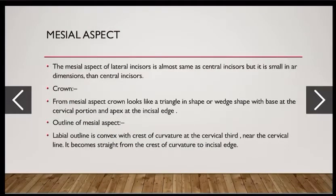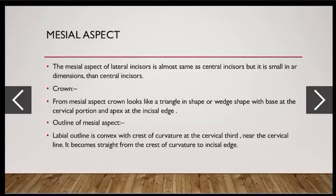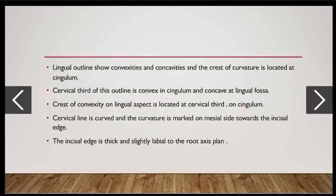Mesial aspect: the mesial aspect of the lateral incisor is almost the same as the central incisor, but smaller in all dimensions. From the mesial aspect, the crown looks triangular or wedge-shaped, with the base at the cervical portion and apex at the incisal edge. The labial outline is convex with the crest of curvature at the cervical third; near the cervical line it becomes straight from the crest of curvature to the incisal edge.